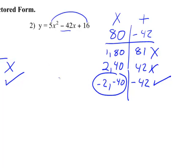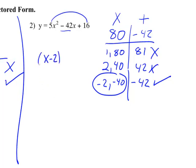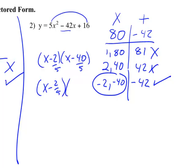I'm going to write it out here. So this is going to be x minus 2 and x minus 40. Since I couldn't get rid of that a value, instead of being 1 like before, it's really 5. So divide by 5. This doesn't reduce, so it's still x minus 2/5. But this one does — negative 40 divided by 5 gives me 8, so x minus 8.